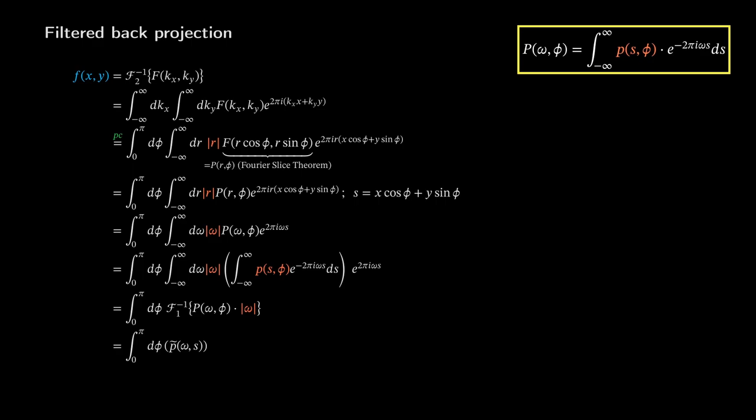As computers only understand discrete summation and not continuous integration, we sum over all projections. Capital M is here the total amount of projections and small m goes from 0 to M-1. We have made it. Now we can write a few lines of Python code and make a tomographic reconstruction.